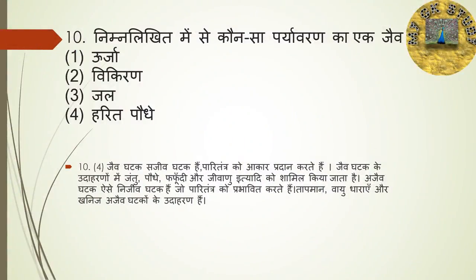Question number 10: निम्नलिखित में से कौन सा पर्यावरण का एक जैव घटक है? Options हैं — ऊर्जा, विकिरण, जल, हरित पौधे। Right answer है हरित पौधे। जैव घटक सजीव घटक हैं जो परितंत्र को आकार प्रदान करते हैं। जैव घटक के उदाहरण में जन्तु, पौधे, फफूंदी और जीवाणु शामिल हैं। अजैव घटक जैसे तापमान, वायुदाब और खनिज निर्जीव घटक हैं।